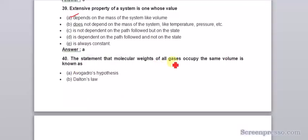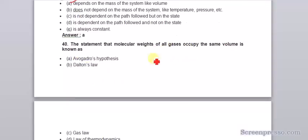Extensive property of a system is one whose value depends upon the mass of the system, like volume. The statement that molecular weight of all gases occupy the same volume is known as Avogadro's hypothesis.